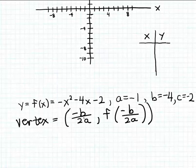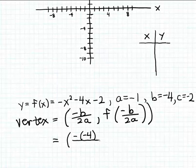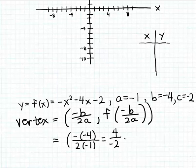Let's plug these values into the vertex formula to find the coordinates of the vertex. According to the formula, the x-coordinate of the vertex is -b over 2a. That's -(-4) over 2 times (-1), which gives us 4 divided by -2, and that simplifies to -2.